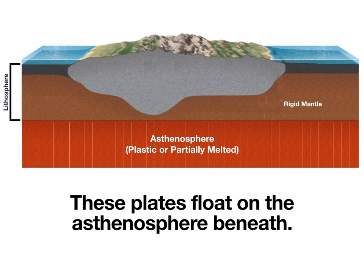Keep in mind that information can be found on your earth's interior chart in your reference tables. That crust, whether oceanic or continental, along with the orangey section called the rigid mantle — those two together make up our lithosphere, this solid outer shell of the earth. Beneath that is a gooey, plastic, partially melted bubblegum layer called the asthenosphere. The plates we live on are actually floating on the asthenosphere beneath.